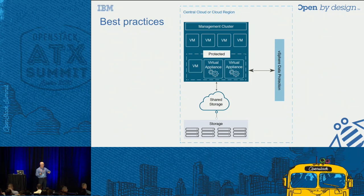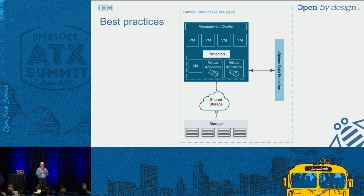A key piece of advice: leveraging tools like vSphere Data Protection and replicating your storage with what SoftLayer provides, combined with multi-region and multi-datacenter capabilities, results in a really robust design. It provides several use cases to gain trust from the customer and demonstrate very different disaster recovery scenarios. That was a very key differentiator.